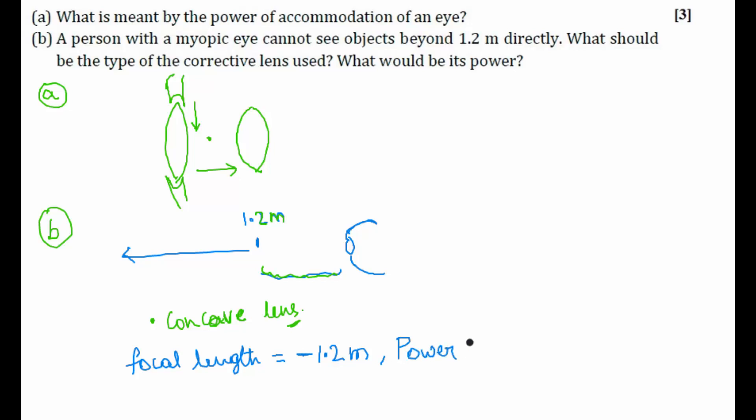Now power of a lens is equal to 1 by focal length. This will be equal to 1 by minus 1.2 meters in the denominator, so this will give you minus 0.833 diopters approximately. So this will be the power of lens used.